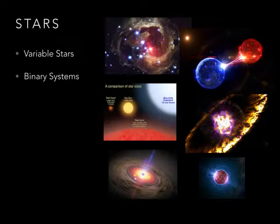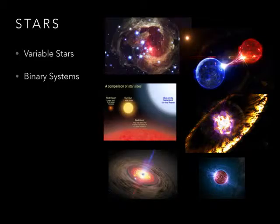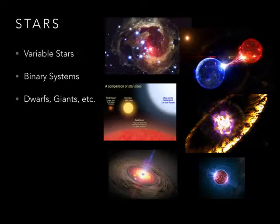Binary systems — who knows what binary means? Binary means two. So it's a system of two stars that live together and orbit around each other. A lot of times they can exchange gases. They also study all the different types of stars. Our Sun is a middle-aged, medium-sized star. There can be very small stars like a red dwarf, or giants like a red giant or a blue-white supergiant.